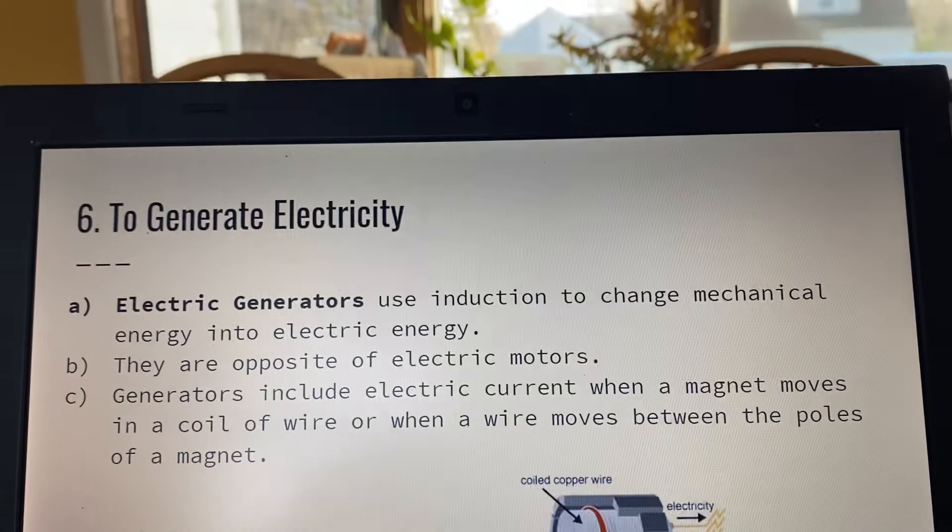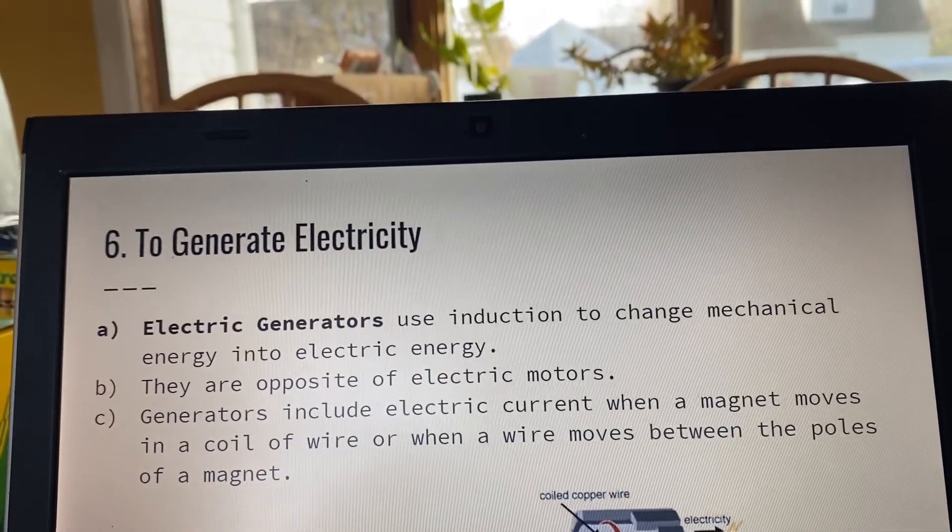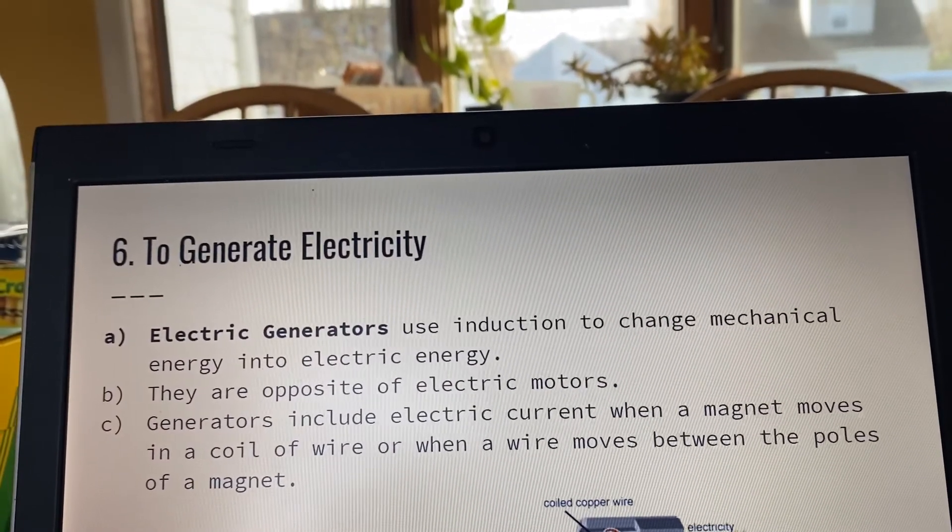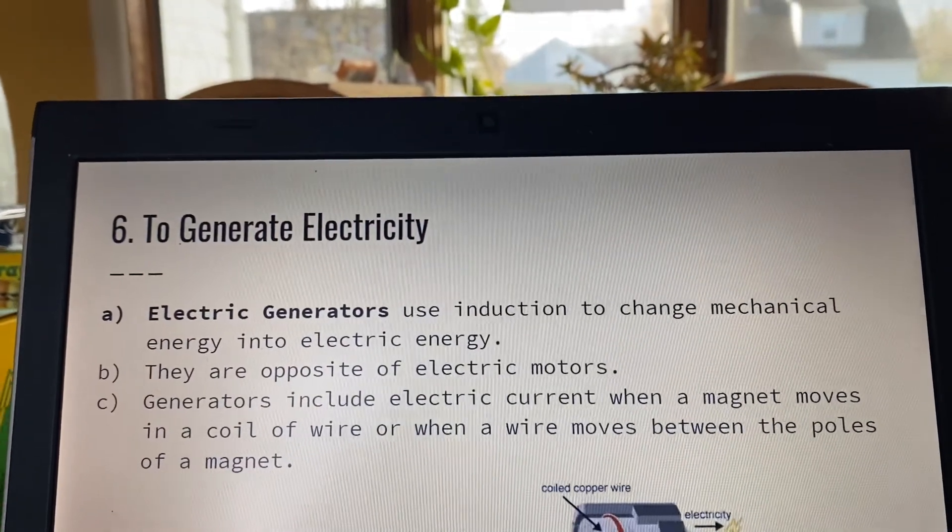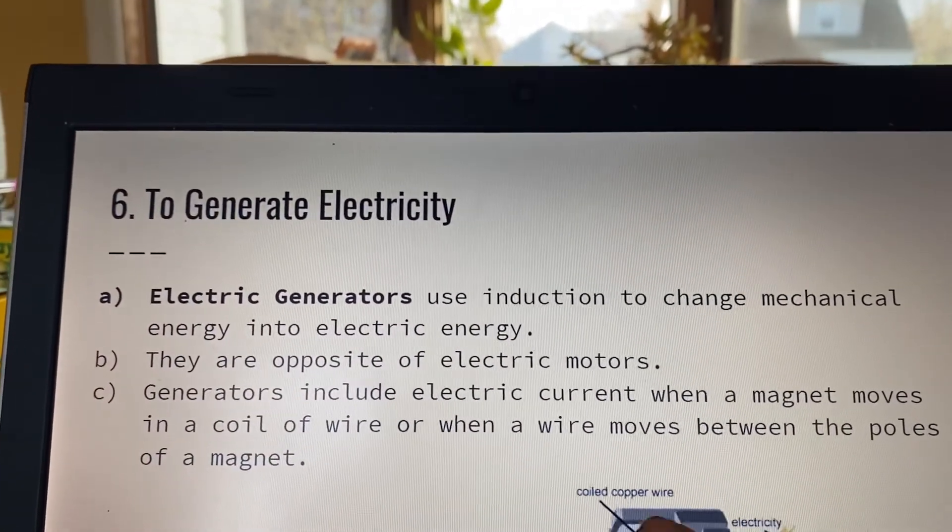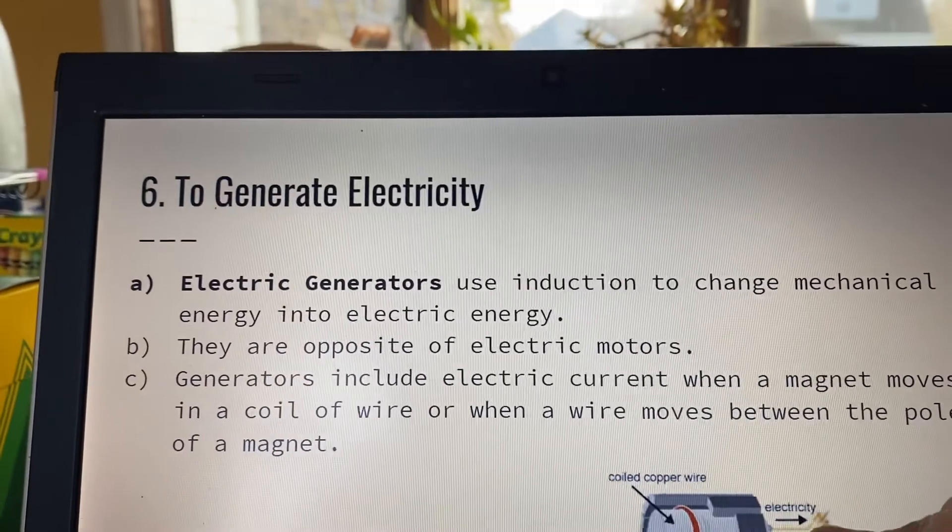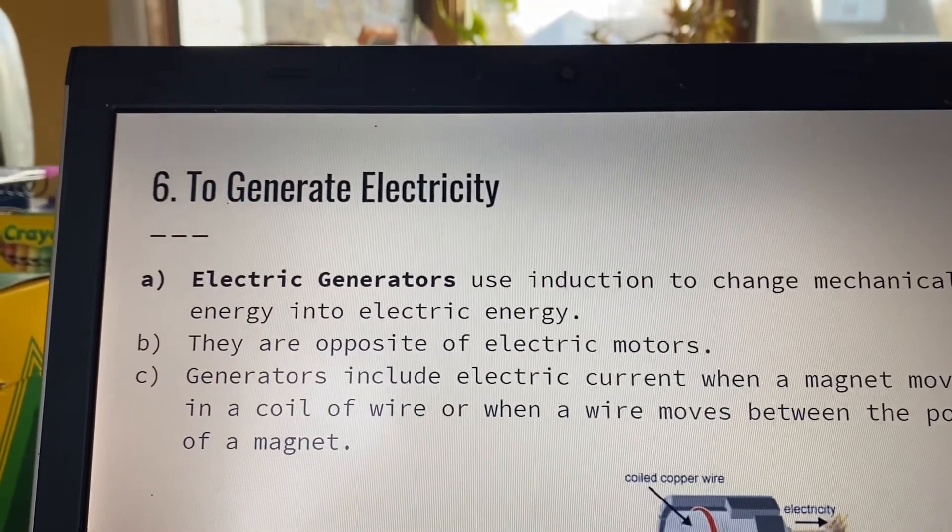They are opposite of electric motors. Generators include electric current when a magnet moves in a coil of wire or when a wire moves between the two poles. So here you have the copper wire. The movement of the copper wire generates the electric field, the electricity.